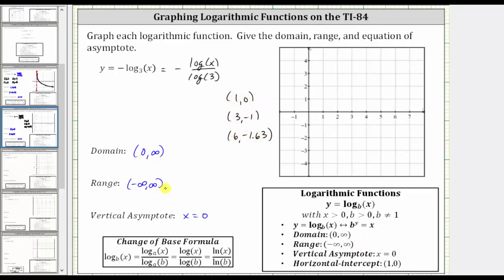Let's begin by sketching the vertical asymptote of x equals zero, which is the y-axis. One comma zero is the horizontal intercept or x-intercept. And we have three comma negative one. And then six comma negative 1.63, which is approximately here.